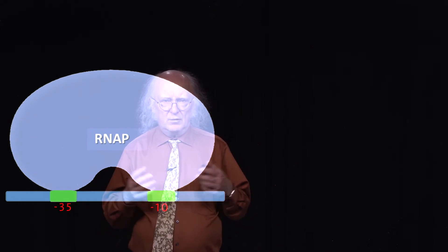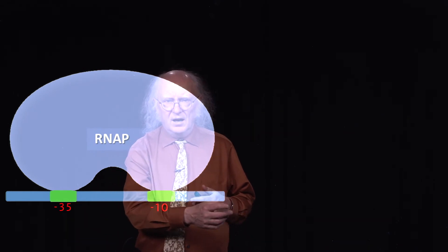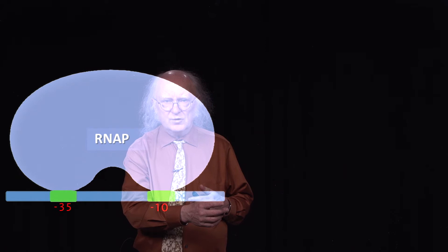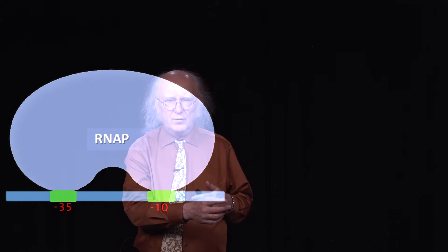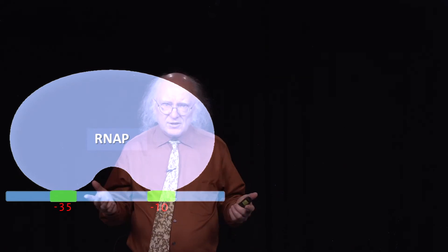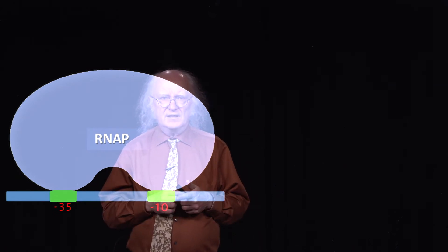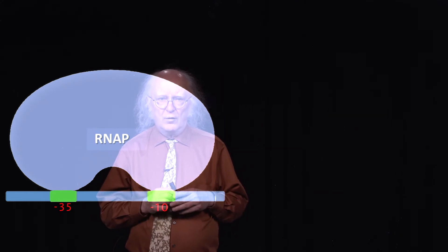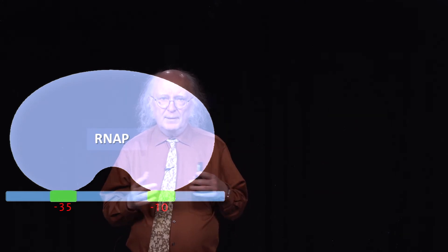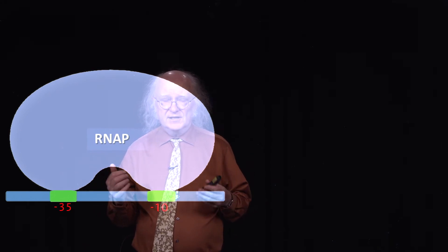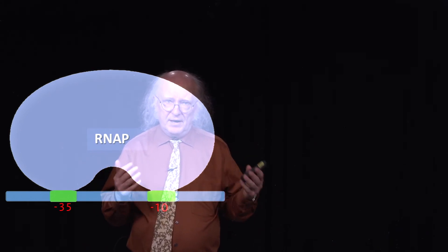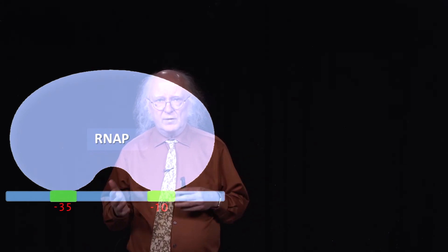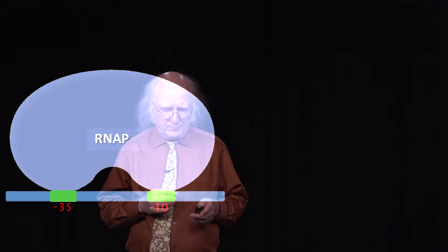We can see that there are binding sites that tell the RNA polymerase where to bind, and then up ahead of that at position one, that's actually where the first base of the messenger RNA that's going to be made will be put into the new messenger RNA. Remember that messenger RNA is the RNA that's used by the ribosomes to translate and to make protein.